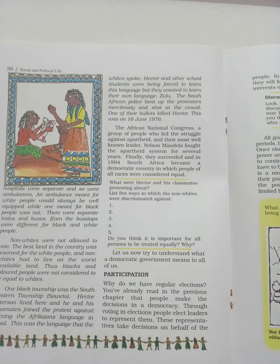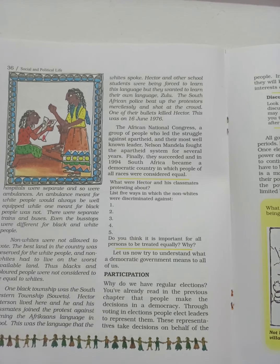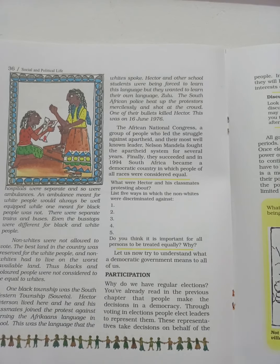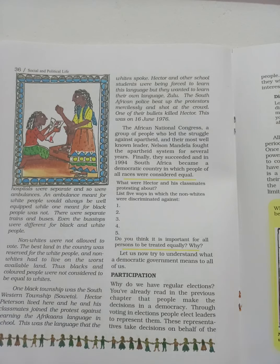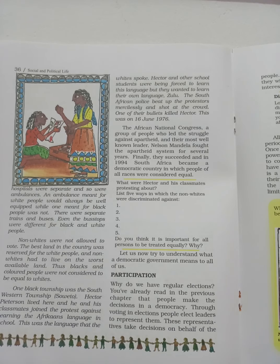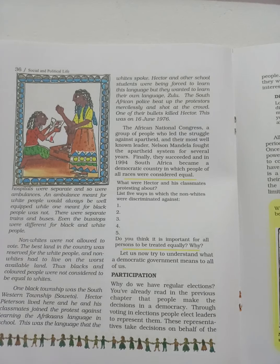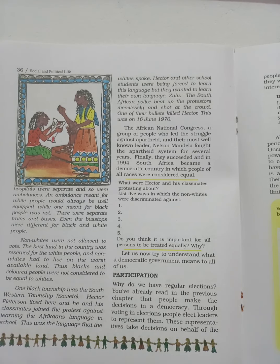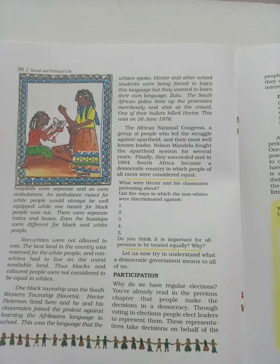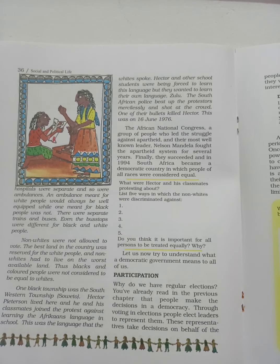Hospitals were separated, and even ambulances were separate for white and black people. The ambulances for white people were well-equipped, while those for black people were not. There were separate trains and buses, and even bus stops were different for black and white people. The non-whites were not allowed to vote. The best land in the country was reserved for white people, and non-whites had to live on the worst available land. They also did not have the right to study in their own languages.